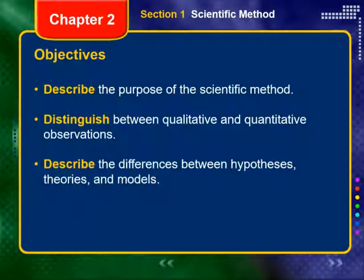At this point, you should be able to describe the purpose of the scientific method, distinguish between qualitative and quantitative observations, and describe the differences between hypotheses, theories, and models.